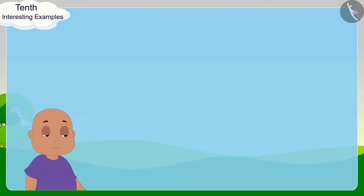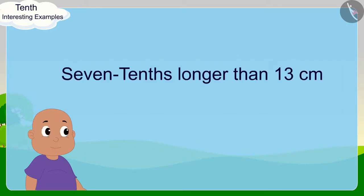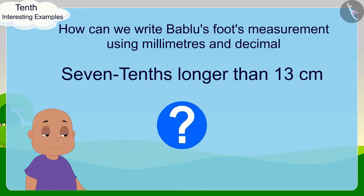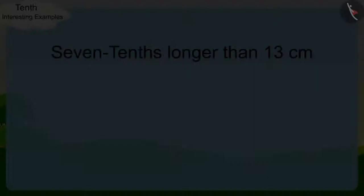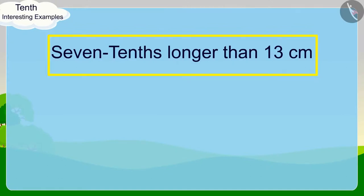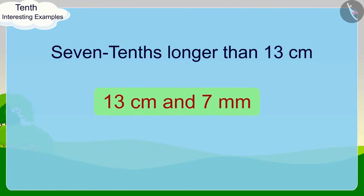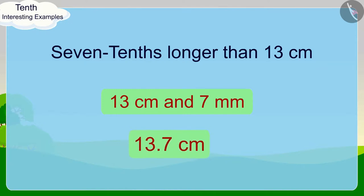Bablu's foot's measurement is 7 tenths longer than 13 centimeters. Children, can you tell how we can write Bablu's foot's measurement using millimeters and decimal? If you wish to, you may stop the video and find the answer. Bablu's foot's measure is 7 tenths longer than 13 centimeters. This means Bablu's foot's measurement is 13 centimeters and 7 millimeters or 13.7 centimeters.